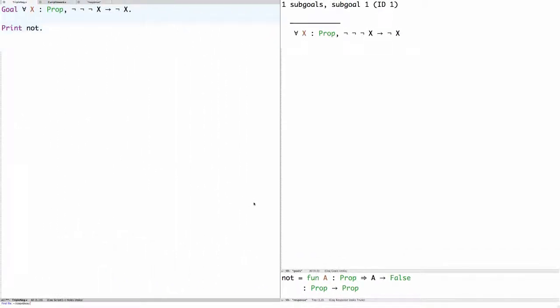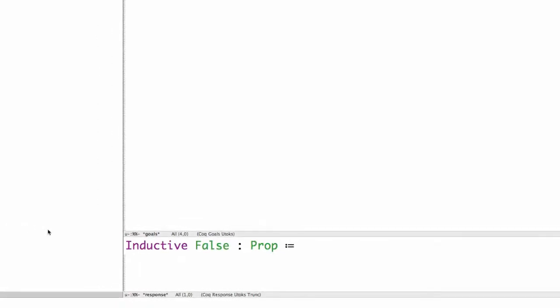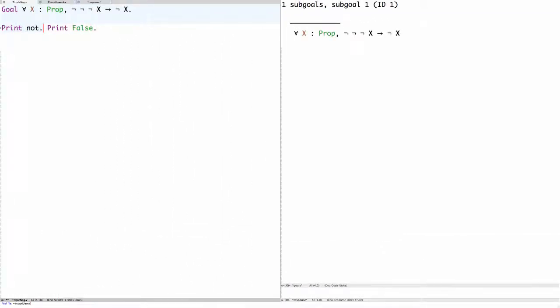Now, how is false defined? We can also use the print command on false, and it will tell us that the definition is inductive false in prop, colon equals, and then there's nothing else. So this means that false is defined inductively in Coq, but we don't give any way of proving false. So effectively, false is a proposition for which we have no proof.